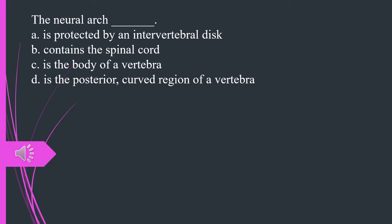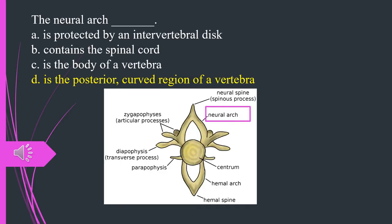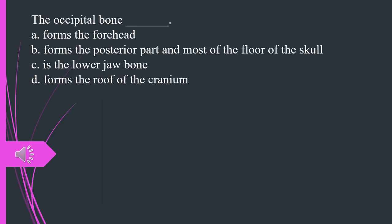The neural arch, A. is protected by an intervertebral disc. B. Contains the spinal cord. C. Is the body of a vertebra. D. Is the posterior, curved region of a vertebra.